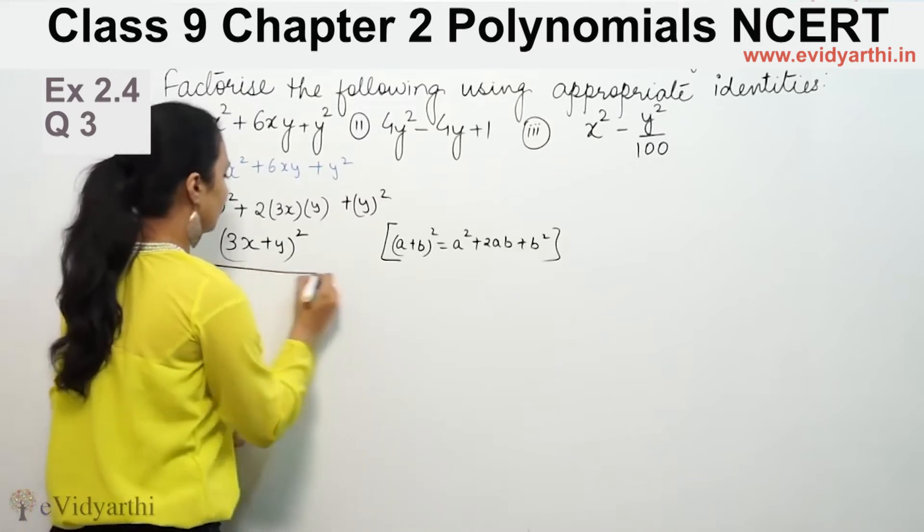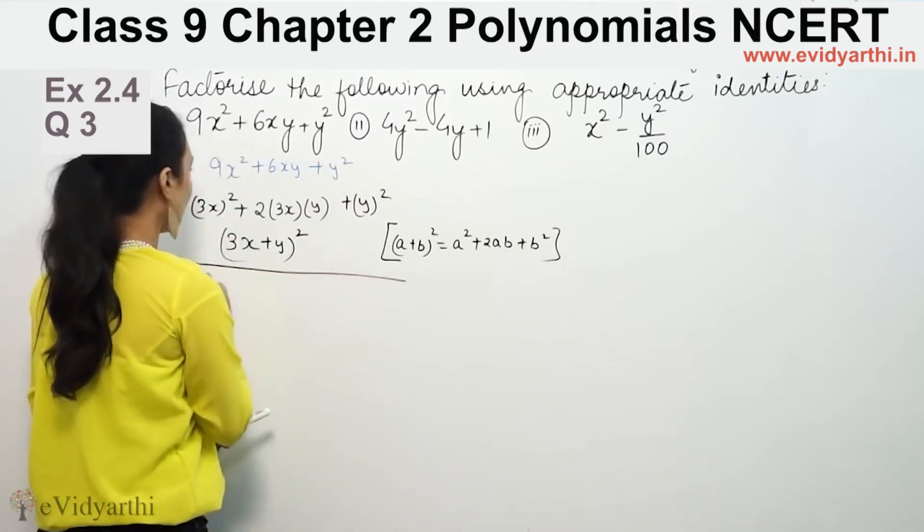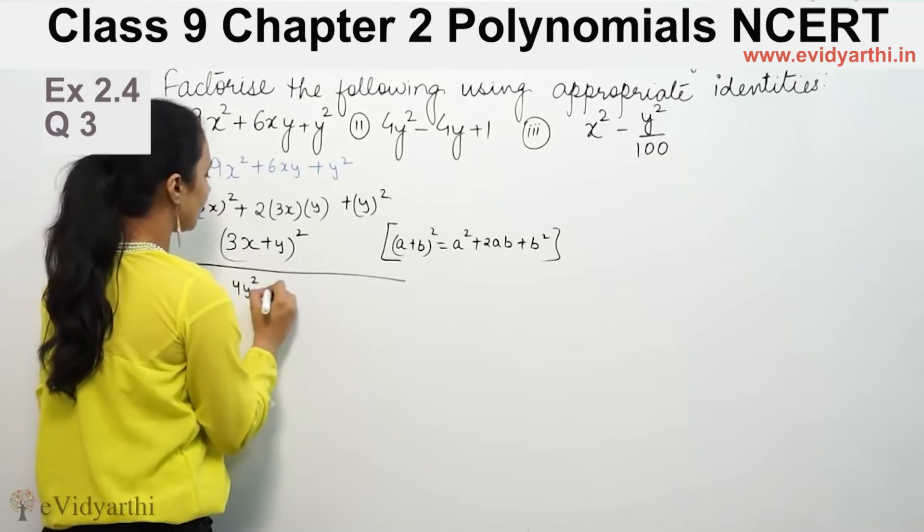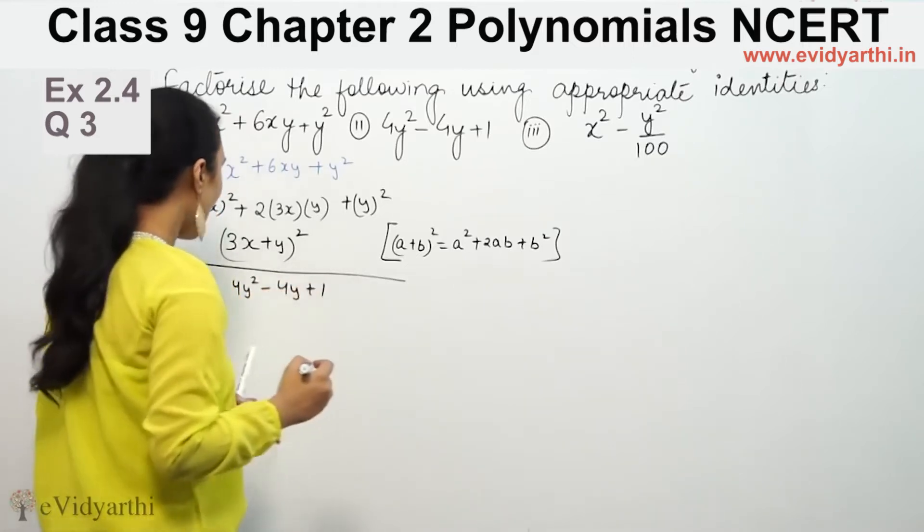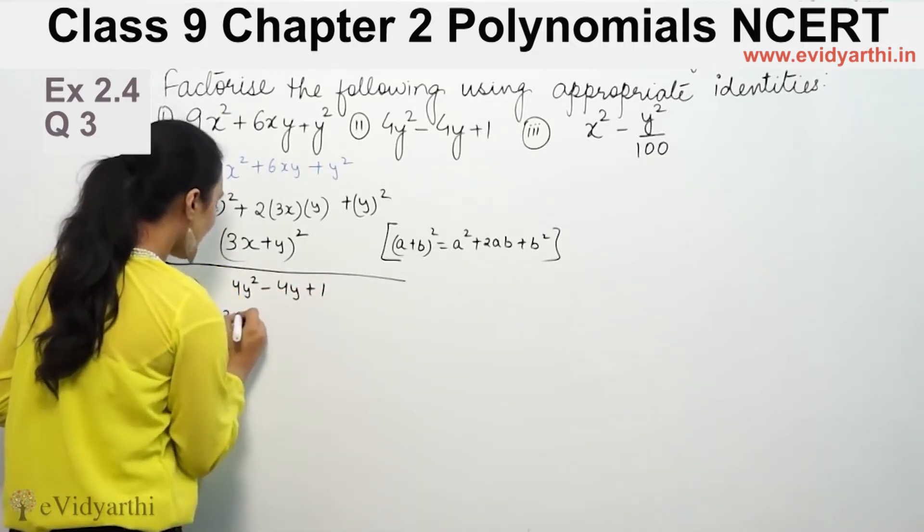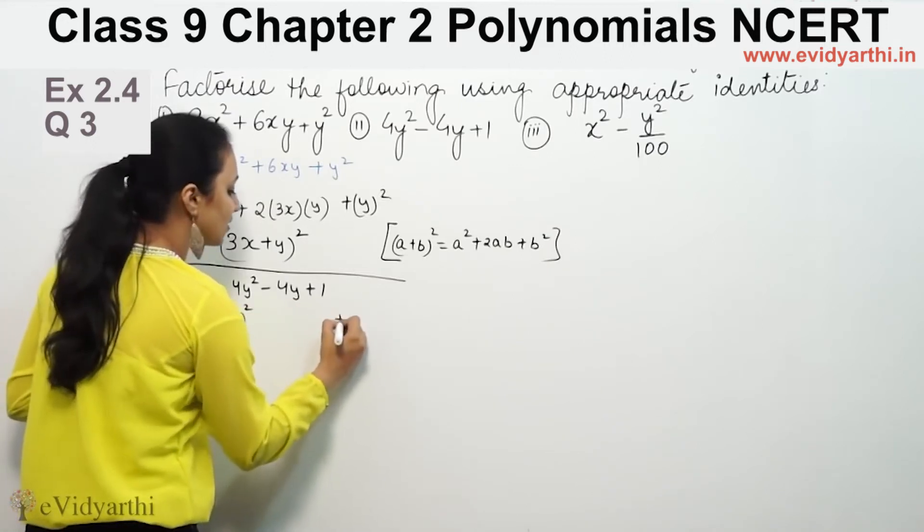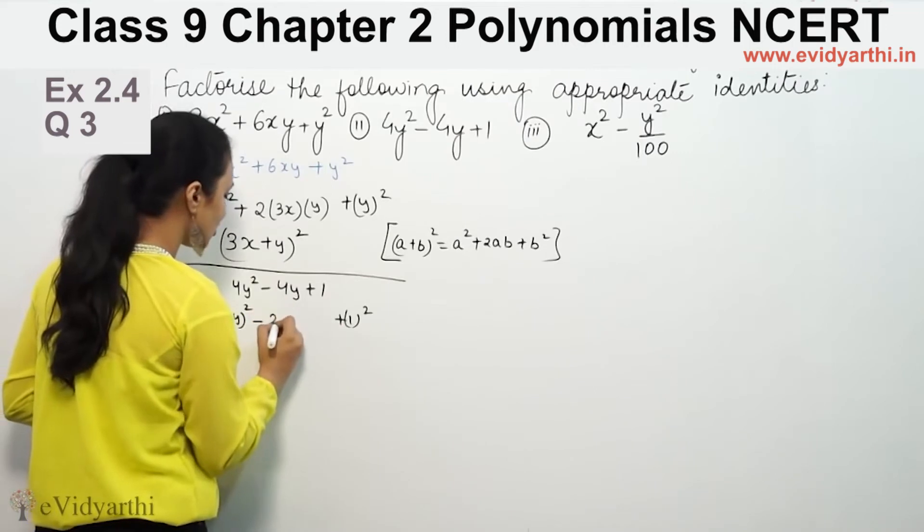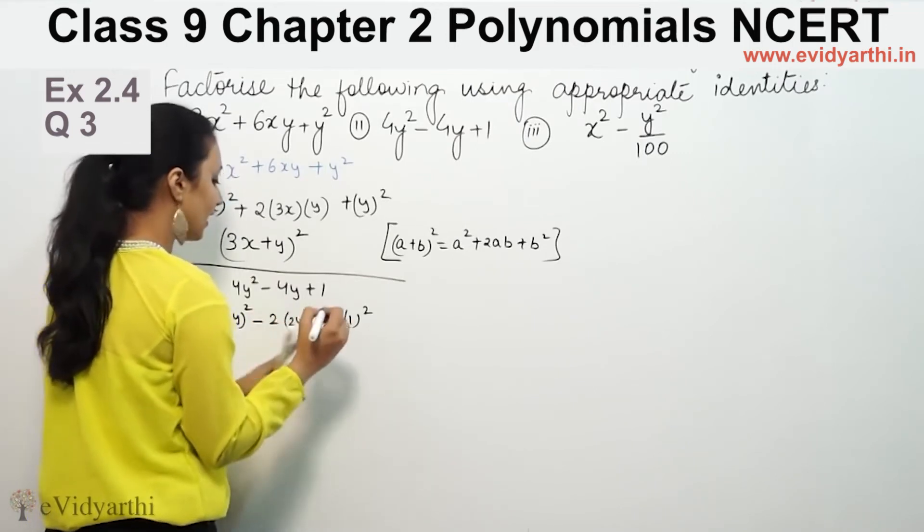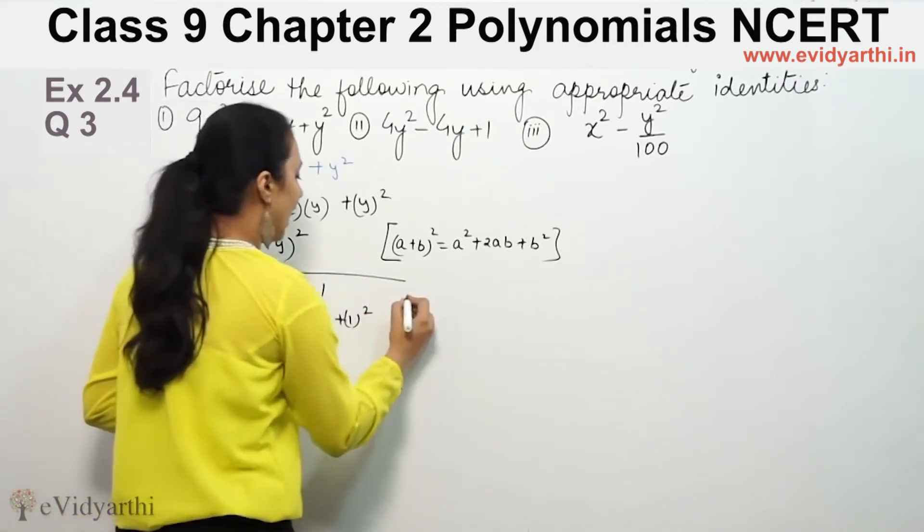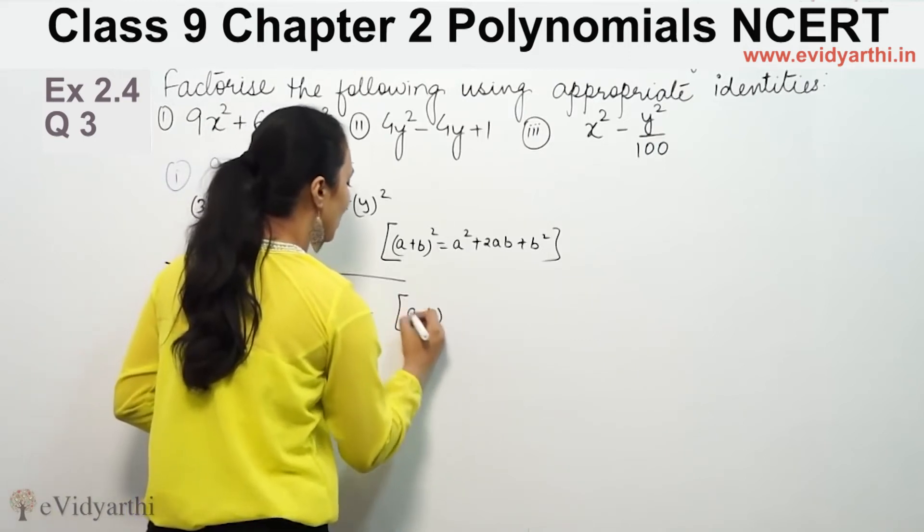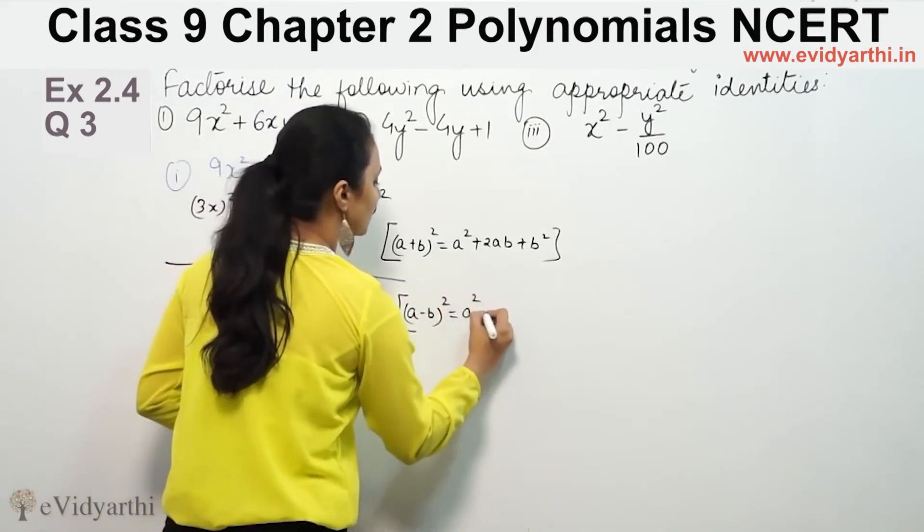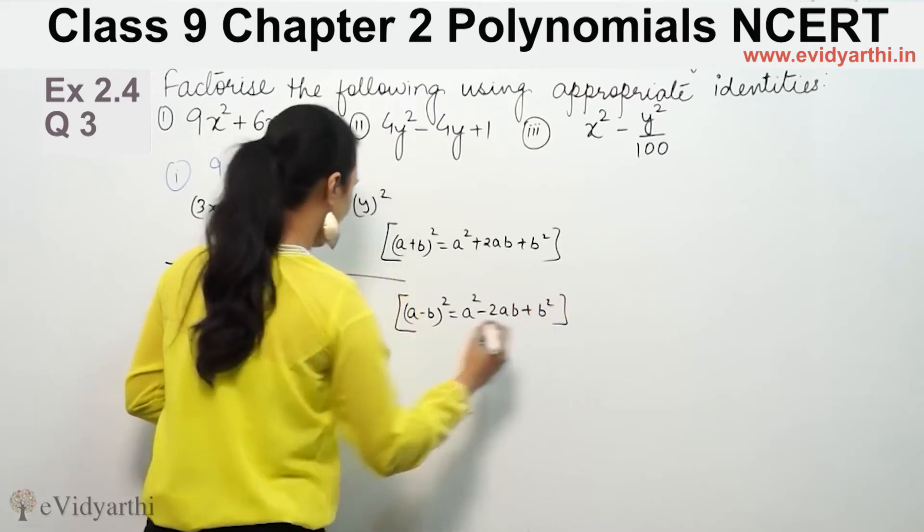In the second part, we have 4y² minus 4y plus 1. Now, this is (2y)². Last term, we can write 1². And we have minus sign here. Then, 2 into a, 2y into b, 1.